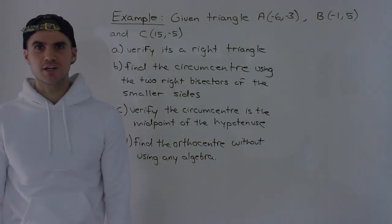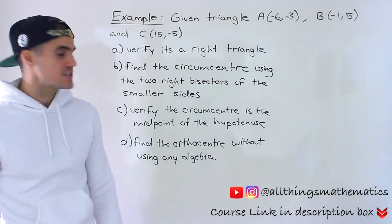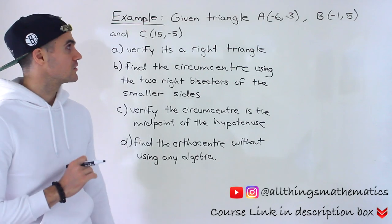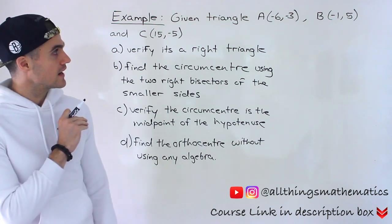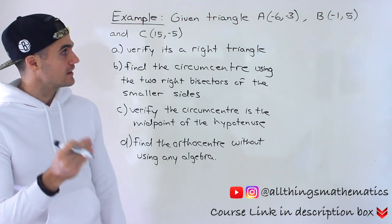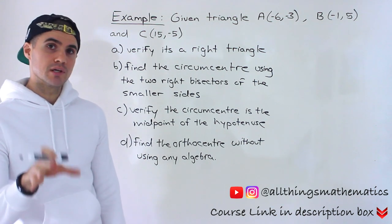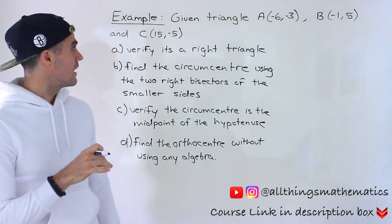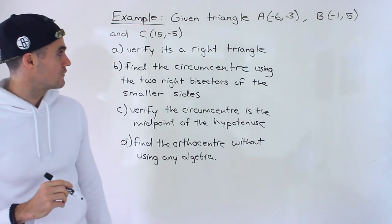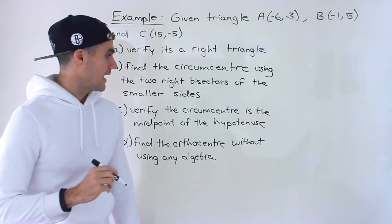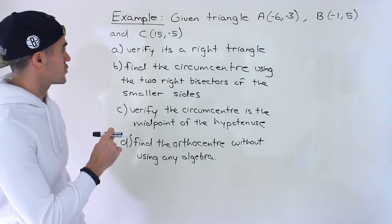What's up everyone? Patrick here. Welcome back. Moving on to another question dealing with triangles. We are given a triangle with vertices A at negative 6, negative 3; B at negative 1 and 5; and C at 15 and negative 5. We have a couple of questions dealing with this triangle.